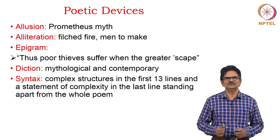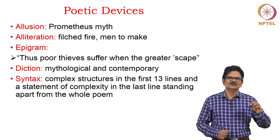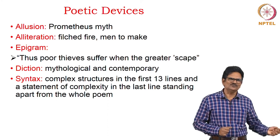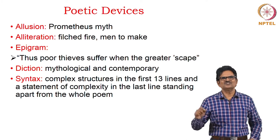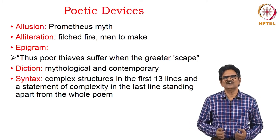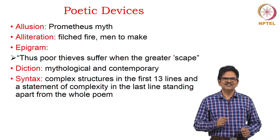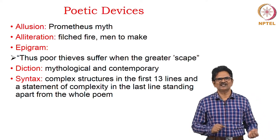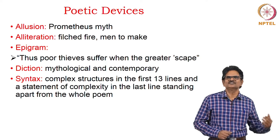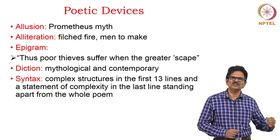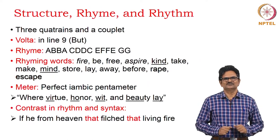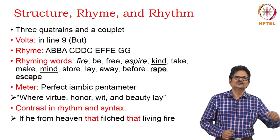Quite a few poetic devices can be noticed in this poem. The first poetic device is allusion — it is very prominent, and the whole poem is centered around the Prometheus myth. We also have alliteration in the case of 'filched fire' and 'meant to make.' The beauty of this poem lies in the epigrammatic line at the end: 'Thus poor thieves suffer when the greater escape.' We also have diction appropriate to both the mythological story and contemporary life. The syntax is quite complex, with many complex structures in the first thirteen lines, and the last line stands as a separate statement of complexity.